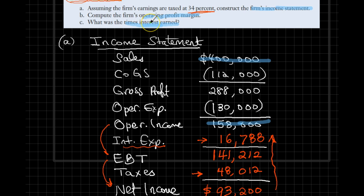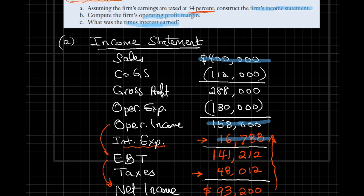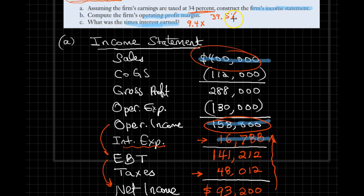Finally, for times interest earned, we take operating income of $158,000 divided by interest expense of $16,788, which gives us 9.4 times. The units of this ratio are 'times,' so the answer is 9.4 times. Operating profit margin was 39.5% and times interest earned is 9.4 times — that completes our solution.